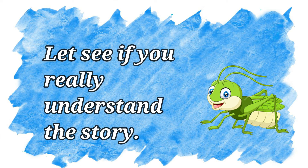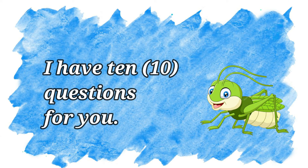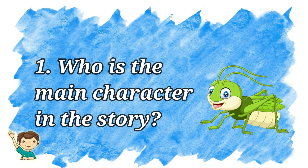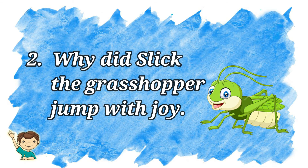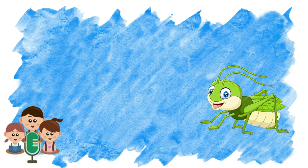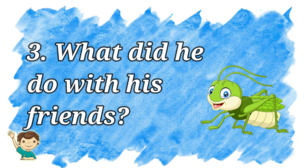Let's see if you really understand the story. I have ten questions for you. Who is the main character of the story? Why did Slick the grasshopper jump with joy? What did he do with his friends?